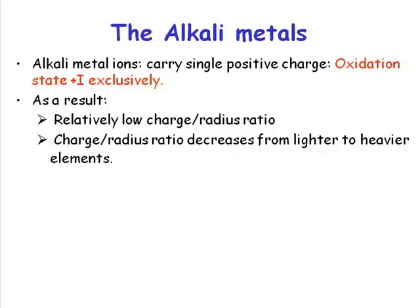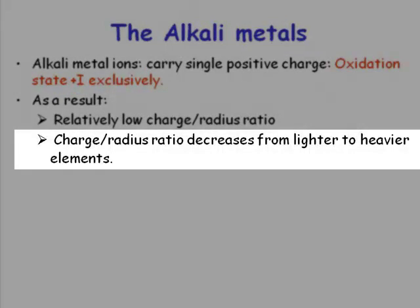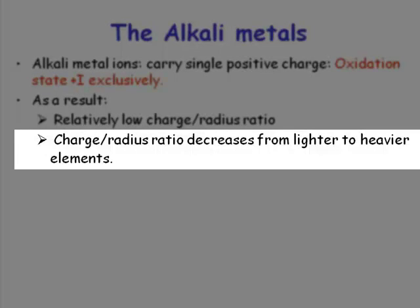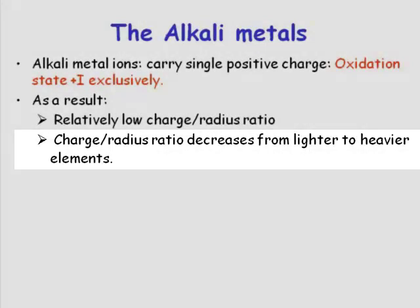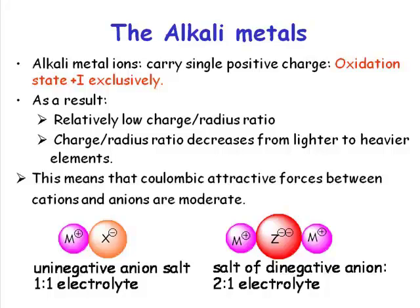Because the size increases, you've still got one positive charge, so that charge-to-radius ratio is going to get lower and lower. Electrostatic interactions between these ions are actually greater for lithium than they would be for cesium, simply because cesium is much larger. So we have relatively weak Coulombic interactions between cations and anions, and this means you're going to have relatively low lattice energies.